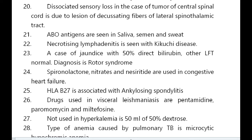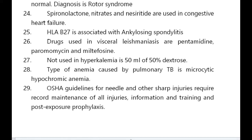Drugs used in visceral leishmaniasis are pentamidine, paromomycin, and miltefosine. Not used in hyperkalemia is 50 mL of 50% dextrose. Type of anemia caused by pulmonary TB is microcytic hypochromic anemia.